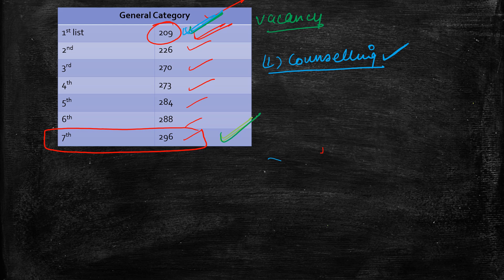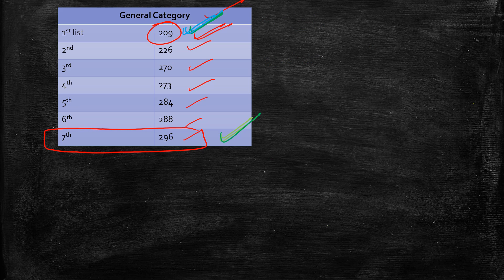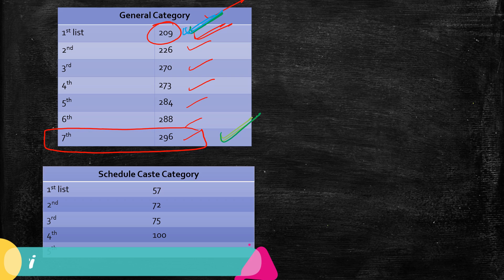Many people don't attend counseling, so their ranks open up. After the first list, vacancies arise because some get admissions elsewhere. You need to keep checking — if a vacancy comes and your rank appears, you can go and deposit fees. This is why, if your rank is called in the given range for counseling, you must attend.